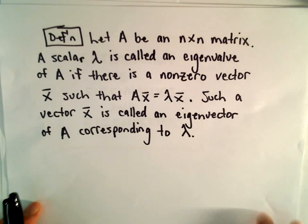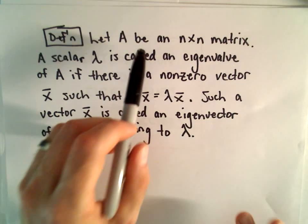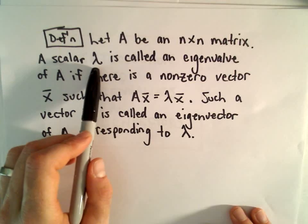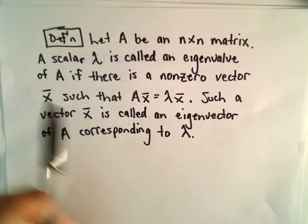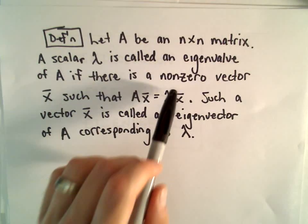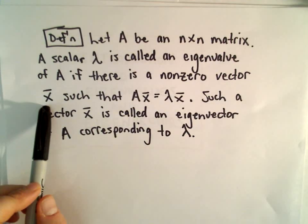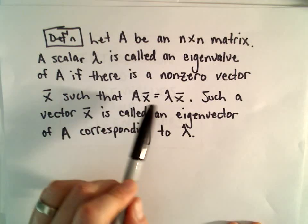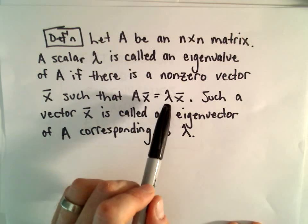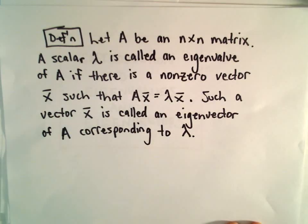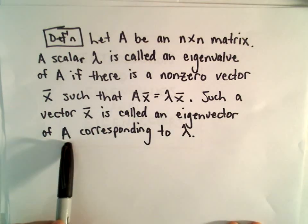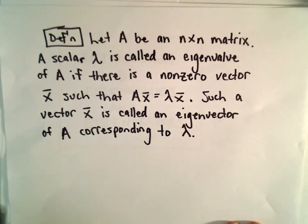Okay, so definition here. Let A be an n-by-n matrix, and we say that a scalar λ is called an eigenvalue of A if there's a non-zero vector x, so that when we take our matrix A and multiply it by x, we get the exact same thing as if we take our scalar λ and multiply it by x. Such a vector x is called an eigenvector of A corresponding to λ.